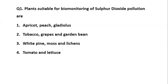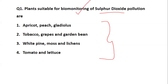Coming to the first question: plants suitable for biomonitoring of sulfur dioxide pollution. The plants which are suitable for biomonitoring of SO₂ pollution include apricot, peas, gladiolus, tobacco, grapes, garden bean, white pine, moss, lichens, tomato, and lettuce. The question asks you to highlight those plants which are suitable for monitoring sulfur dioxide pollution. Let's understand the topic of biomonitoring first.